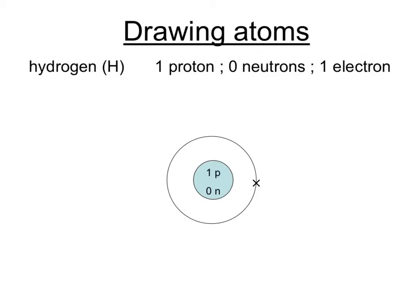Let's start drawing atoms. The simplest atom in the periodic table, the smallest, is hydrogen, which contains one proton, no neutrons at all, and one electron. Now, the proton is found in the nucleus, which I've represented here by the blue circle, and the electron is in an orbit around the outside of that nucleus. That orbit is called a shell.